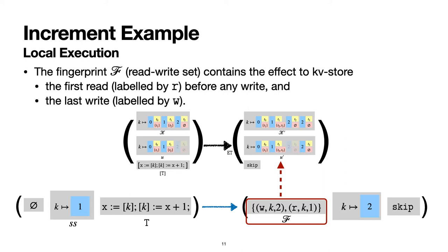To track the effect of a transaction, we collect a fingerprint—that is, a read-write set. We focus on consistency models that satisfy snapshot properties, also known as atomic visibility. Hence, the fingerprint only tracks the first read before any write per key, and the last write per key. In our increment example, the final fingerprint contains two operations: write two to key k, and read one from key k.